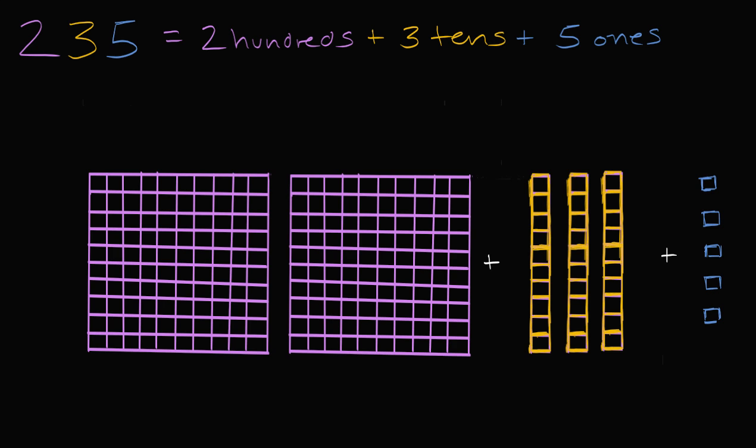So I'm going to add, let's add 100. I'll actually do it in yellow and blue. So I'm adding 1 hundred, 0 tens, and 0 ones. So I'm essentially just adding 100. So plus 100.